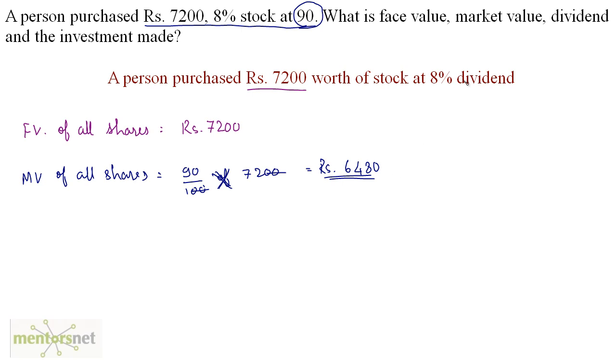Now, the rate of the dividend is 8%, and dividend is always calculated on the face value. We can calculate the dividend on all the shares—dividend is also called the profit or the annual income derived on the face value. So it is 8% of the face value: 8 upon 100 times 7200. Canceling out the zeros, 8 times 72, and that is rupees 576.